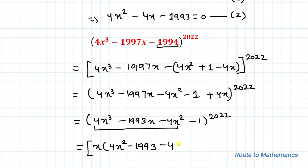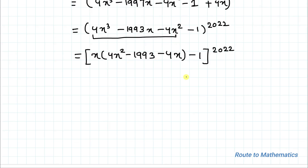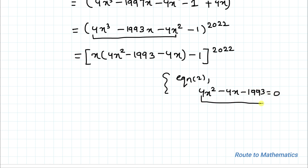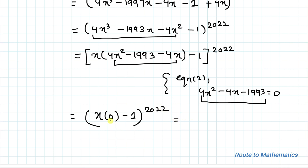From equation 2 we have 4x² minus 4x minus 1993 equals 0. Substituting this value: x multiplied by 0, minus 1, whole to the power 2022. Since 0 multiplied by anything is 0, we have (0 minus 1) to the power 2022, which equals (minus 1) to the power 2022.